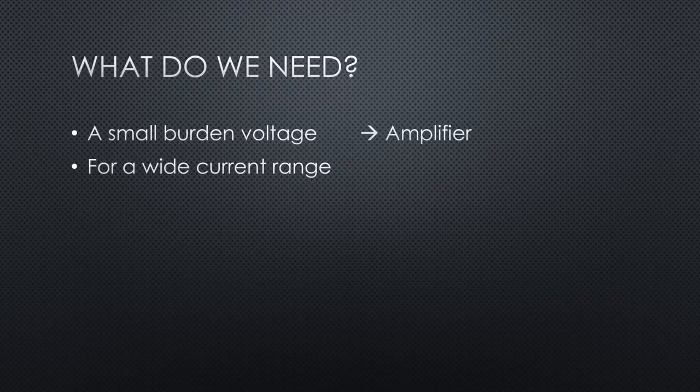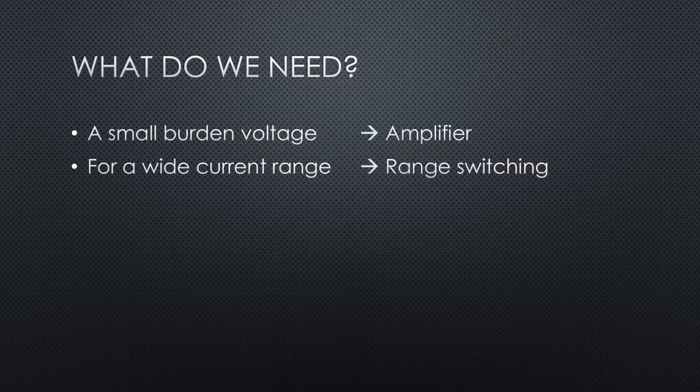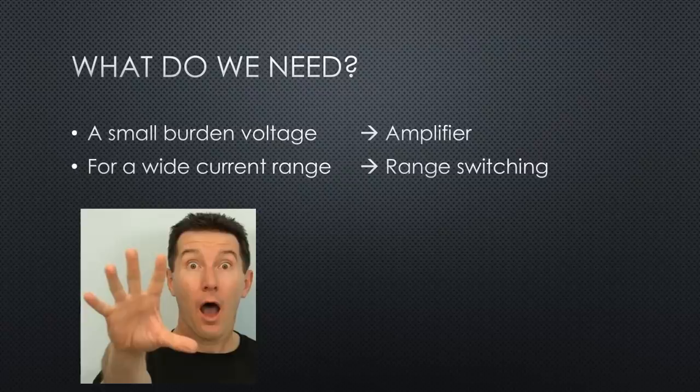So, what do we need? A small burden voltage in a wide current range. For a low burden voltage, we need an amplifier. And for a wide range, we need range switching. What looked easy in the beginning become quite complicated.